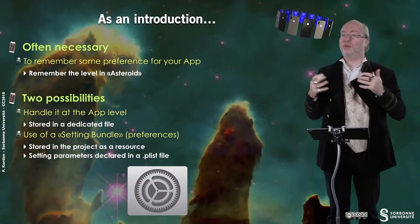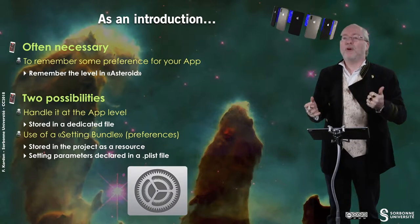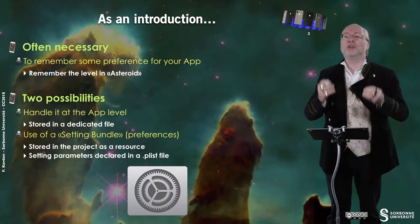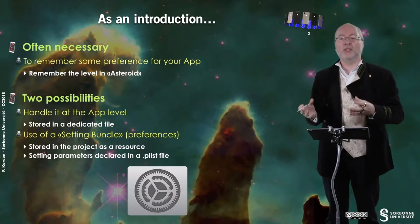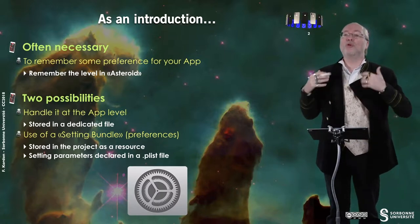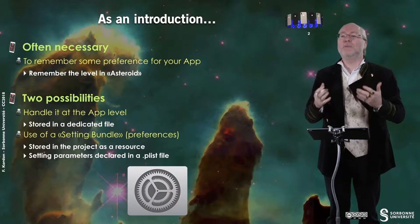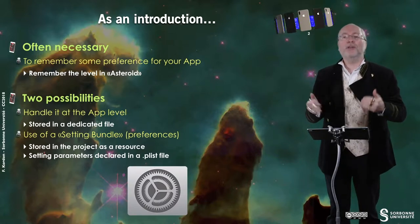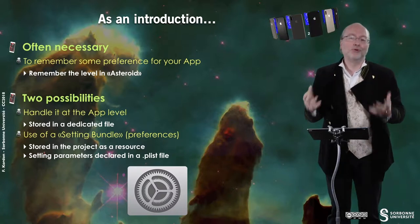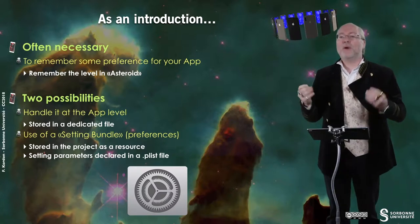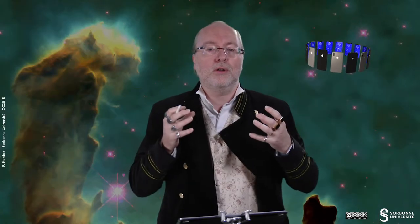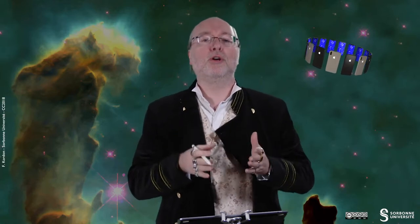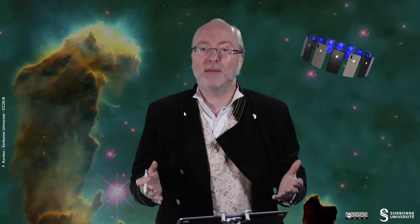In fact, you have two possibilities. First, you can handle it at the application level by just storing the information in a dedicated file. But you can also use a settings bundle to store preferences — it's stored in the project as a resource, and the setting parameters are declared in a .plist file, in XML format.